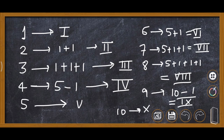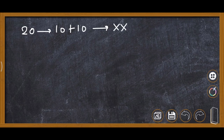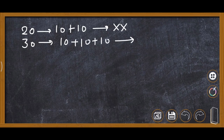This completes the counting from 1 to 10. Now for 20, since 10 plus 10, we write it as XX. For 30, we write 10 three times, so it becomes XXX.